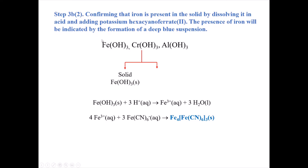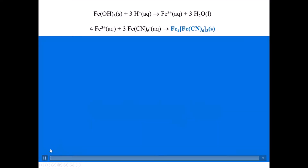To confirm that iron is present in the solid, we dissolve it in acid and then use potassium hexacyanoferrate(II) to create a deep blue suspension, confirming iron. We add acid to the iron hydroxide precipitate, which reacts with the hydroxide and gives us dissolved Fe³⁺. Then when we add the hexacyanoferrate(II), it reacts with iron to form iron(4) hexacyanoferrate as a blue solid suspension.